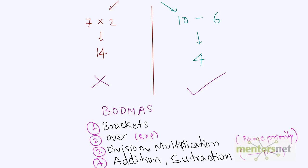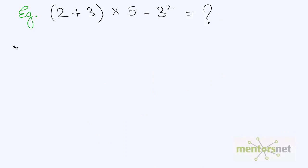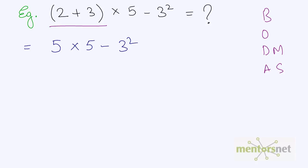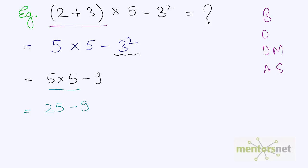Whenever in any expression you have operations with the same priority, you just go from left to right. Let's solve an example using Bodmer's rule. In this expression, firstly we'll solve the brackets, so 2 plus 3 is 5, giving us 5 times 5 minus 3 squared. Now we'll solve the square first because 'over' has more priority, so 3 squared is 9. Next we solve the multiplication first before the subtraction: 5 times 5 is 25 minus 9, which equals 16.